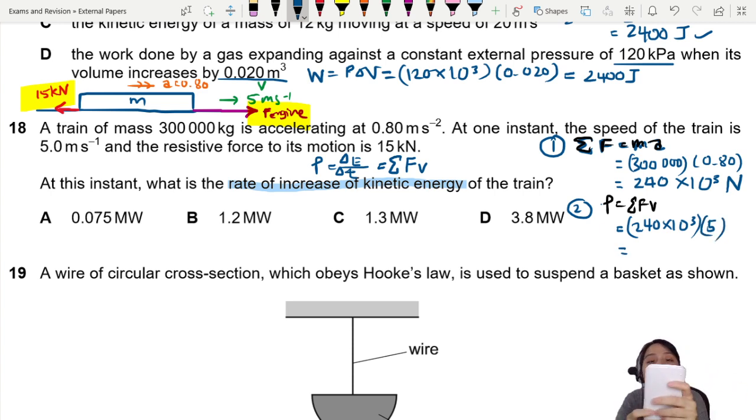That's times 5. You should get 1.2 times 10⁶. Power is what unit? Watt. So 1.2 megawatt is the best answer you can choose for this question.